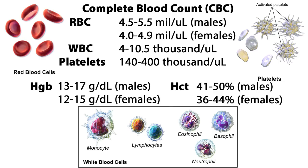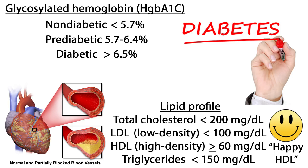Hematocrit is the ratio of the volume of RBCs to the total volume of blood. In males it ranges from 41 to 50 percent, and females range from 36 to 44 percent.